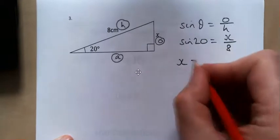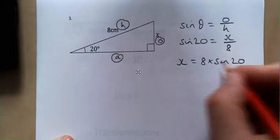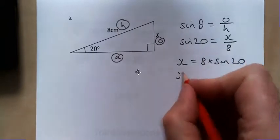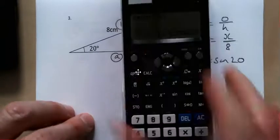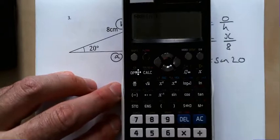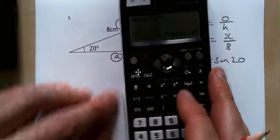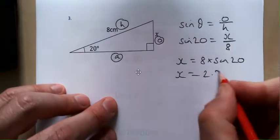Multiplying both sides by 8. I get x equals 8 times sine 20. Now I didn't write times the last couple of times but hopefully you see it's the same thing. So it's 8 times sine 20. 8 multiplied by sine 20 equals 2.74.